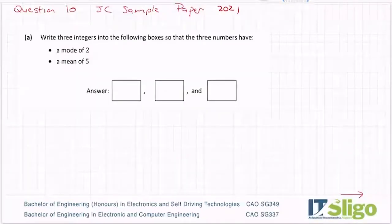Right, question 10. Write three integers into the following boxes so that the three numbers have a mode of two and a mean of five. Okay, so this is your statistics chapter.